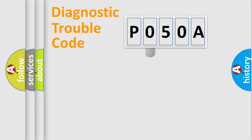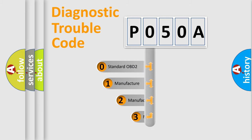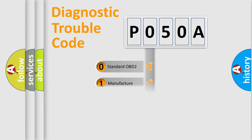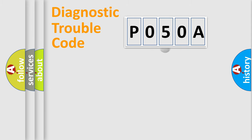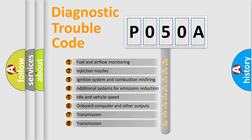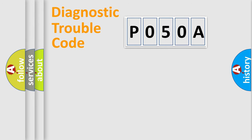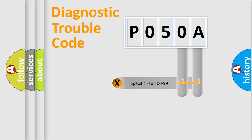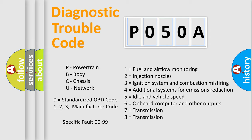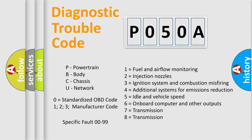This distribution is defined in the first character of the code. If the second character is expressed as zero, it is a standardized error. In the case of numbers 1, 2, or 3, it is a manufacturer-specific error expression. The third character specifies a subset of errors. This distribution is valid only for the standardized DTC code, and only the last two characters define the specific fault of the group.